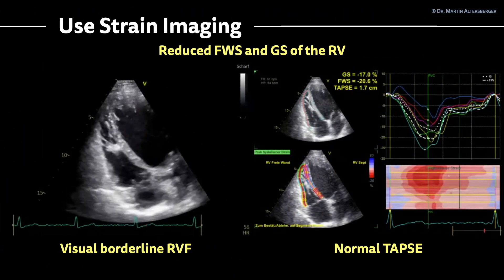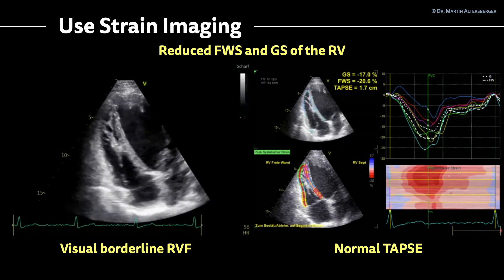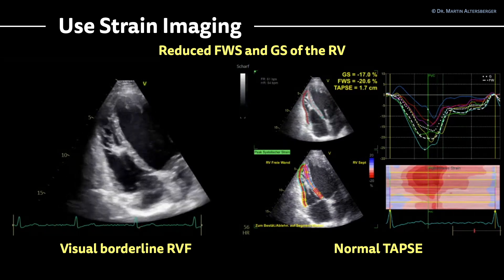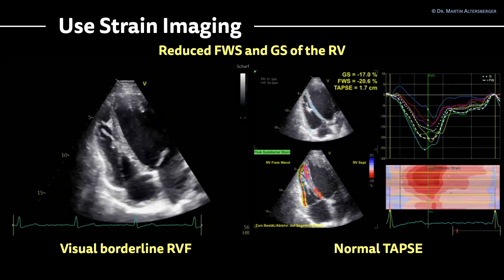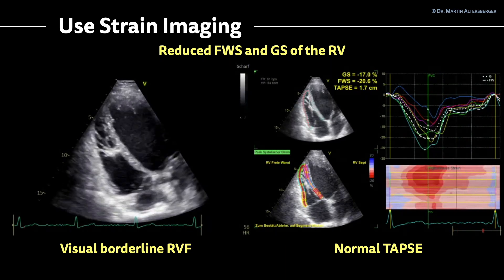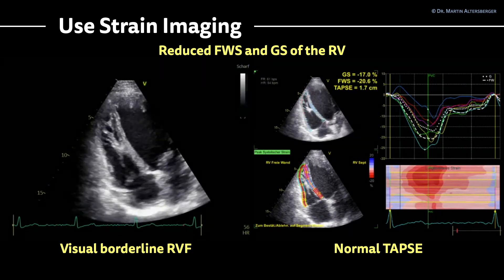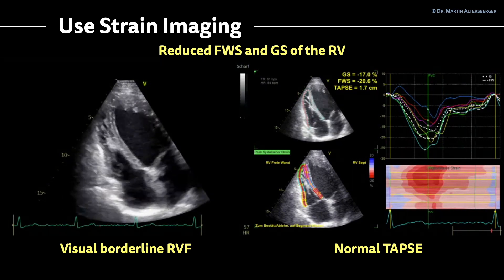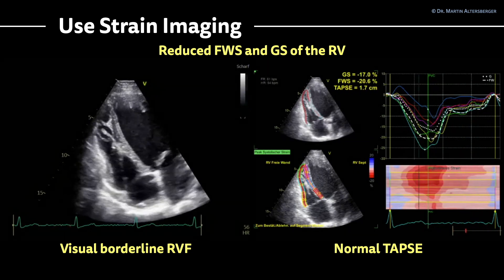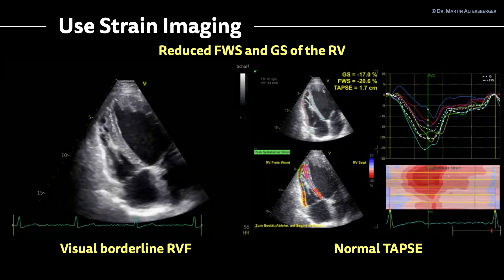Using strain imaging of the right ventricle, both the free wall strain and global strain are reduced. The free wall strain is approximately minus 20.6 to minus 21 percent, which is mildly reduced. The normal value for young healthy individuals would be in the range of minus 23 percent.